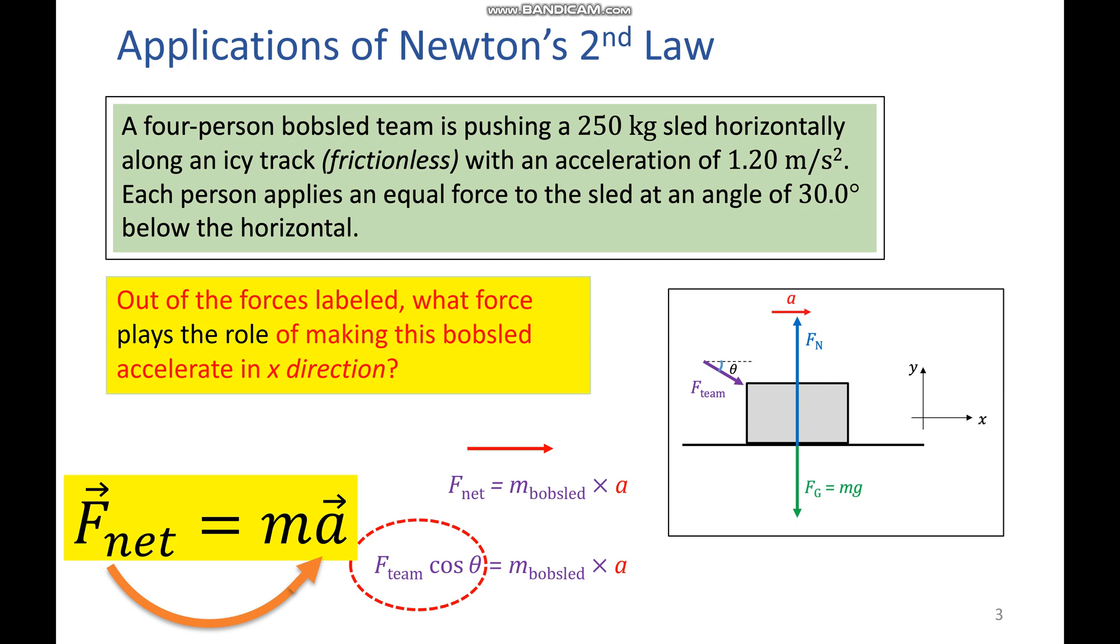Each person applies an equal force to the sled at an angle of 30 degrees. So let's take a look at this diagram. We've got everything that I just said here. Normal force, the force of gravity, the force of your team.